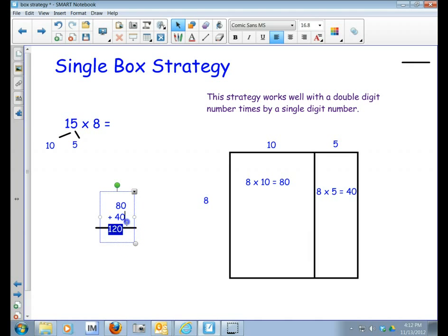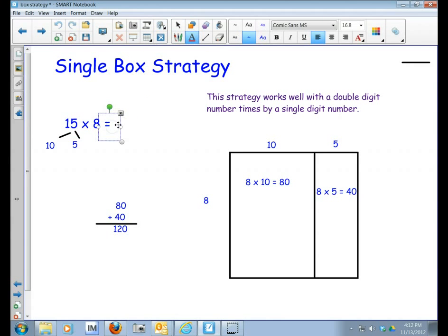And so I have my 0 at the end. So I've got 120. Let me just move that line up so you can see the number a little bit better. So 80 plus 40 equals 120. That means that 15 times 8 equals 120 as well. So let's try one more.